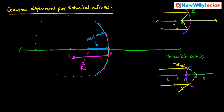The last important term is linear aperture. The diameter of the spherical mirror is called the linear aperture. It is denoted by AB.